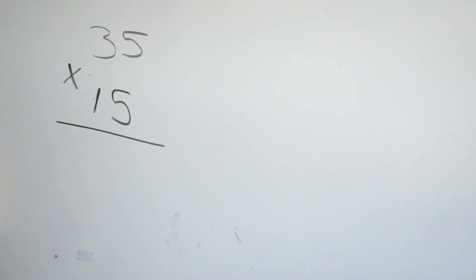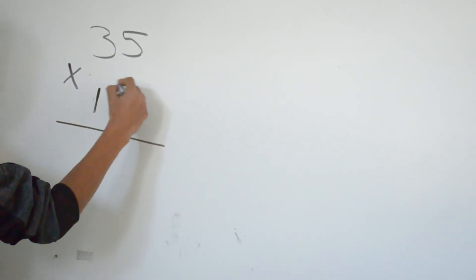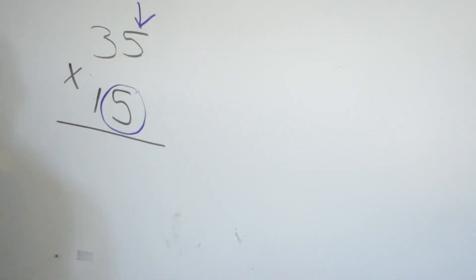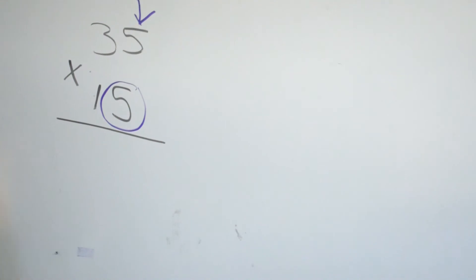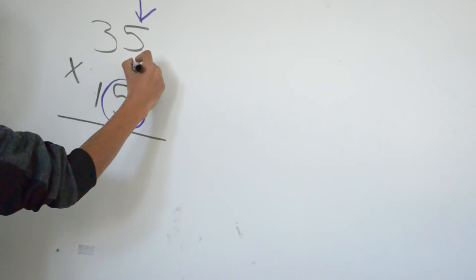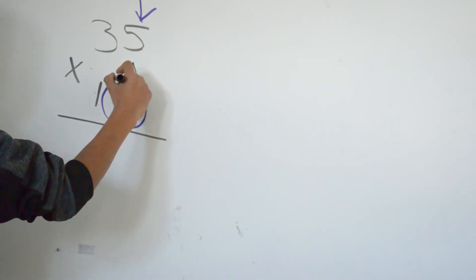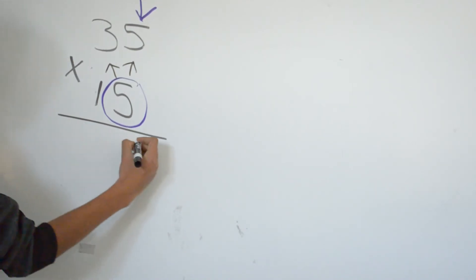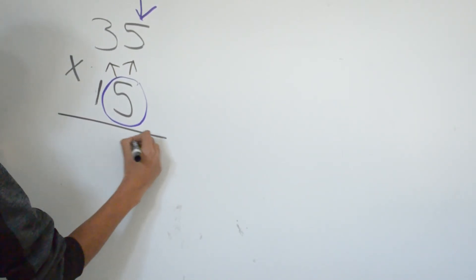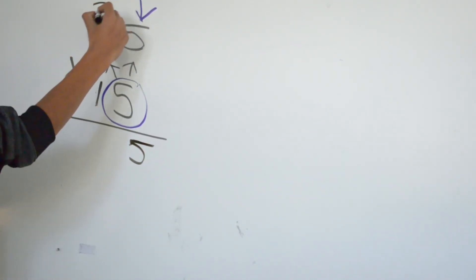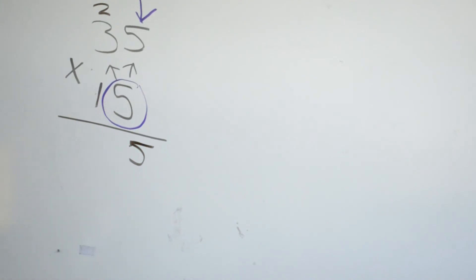I like to circle the second number from the bottom. Make sure you add your arrow. Every time we multiply, we always have to multiply from right to left. So 5 times 5 and 5 times 3. 5 times 5 is 25 — write the 5, bring the 2 on top. 5 times 3 is 15, plus the 2 is 17.